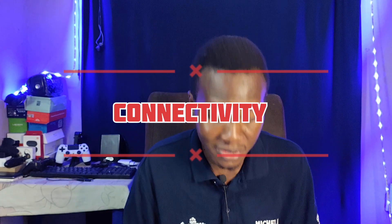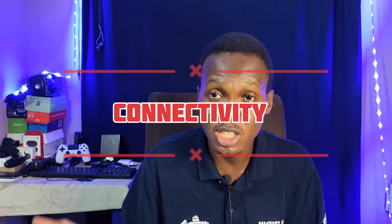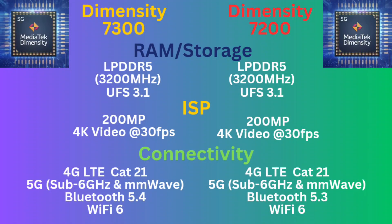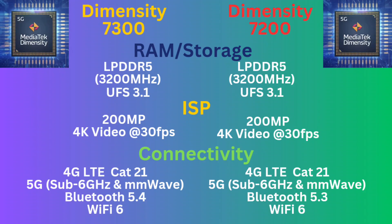For connectivity, they both support 4G Cat 21 and they both support 5G. They both support WiFi 6. They both support Bluetooth 5 — although the 7300 supports Bluetooth 5.4 while the 7200 supports Bluetooth 5.3. There's really not much difference between 5.4 and 5.3 — 5.4 is just a consolidation of efficiency and battery usage. It's mostly the same speeds.